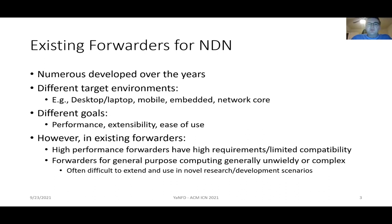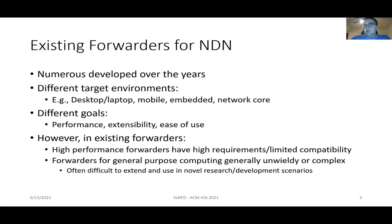There exist multiple forwarders for NDN already that have been developed over the last decade or thereabouts. These target different environments — some are intended for desktops and laptops, more traditional computing environments; some for mobile or embedded devices; and some are intended to run at the network core. There are different goals for different forwarders — some seek high performance, some seek to be extensible for innovation in research and applications, and some are intended to be easy to use by end users or application developers.